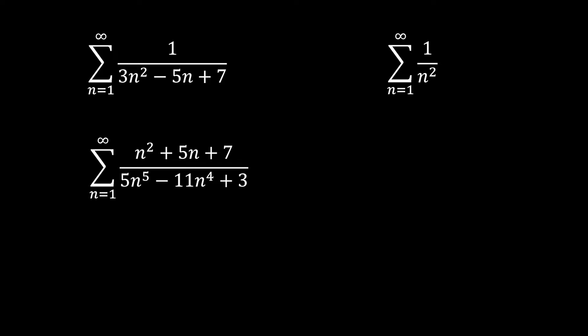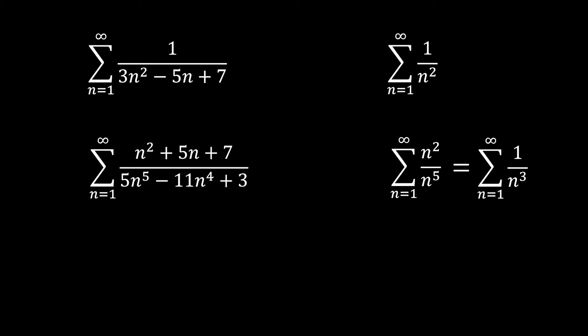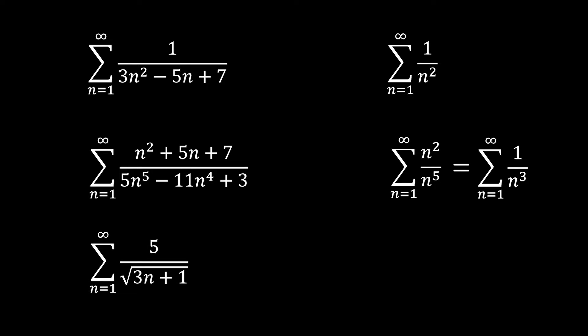Let's consider a more complex problem. The highest power in the numerator is n squared, and the denominator is n to the power 5. So we can express the series as n squared over n to the power 5, which simplifies to 1 over n to the power 3. Now consider the infinite sum of 5 over square root of 3n plus 1. The highest power in the numerator is 1, and in the denominator it is square root n. Therefore, the second series we need to compare with is the infinite sum of 1 over square root n.